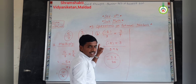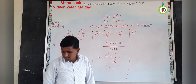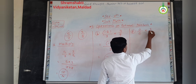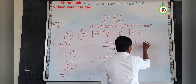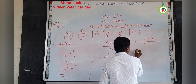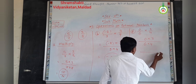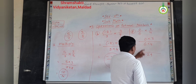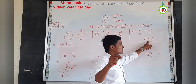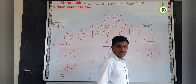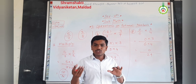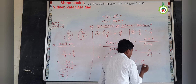Now, one more example we will take. Suppose, the fourth example: zero by six multiplied by three by four. Now, as I want to do the multiplication, I will use the product of numerators and product of denominators. So, at the numerator: zero into three. If I multiply any number by zero, the answer will be zero. So, here the numerator will be zero. So, zero by twenty-four is the number.